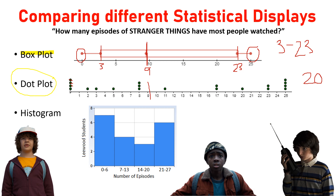Now let's move on to Lucas. Lucas decided to use a histogram. I can also tell by looking at his histogram that he surveyed twenty people, because seven people said they watched from zero to six, four people from seven to thirteen, three people from fourteen to twenty, and six people from twenty-one to twenty-seven. Add those numbers together and yes, he also surveyed twenty people — the same twenty people. These three graphs show exactly the same information in three different ways.